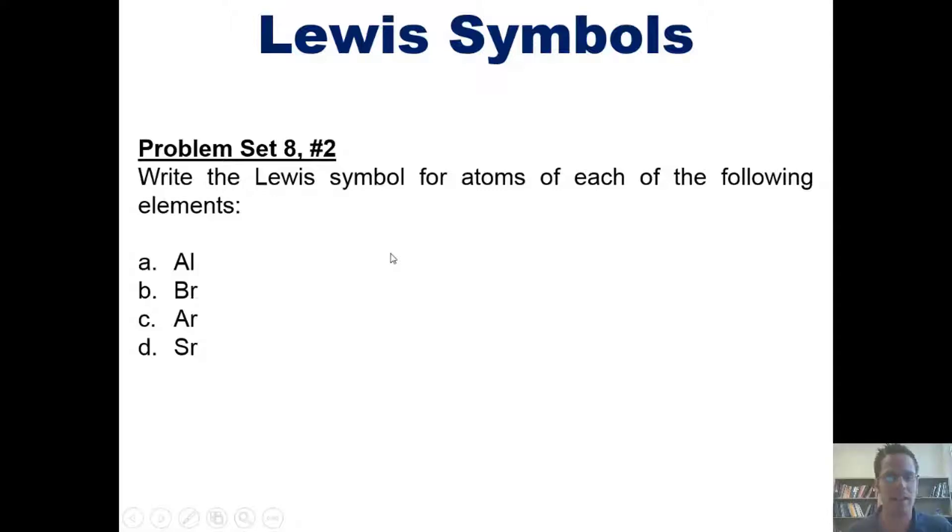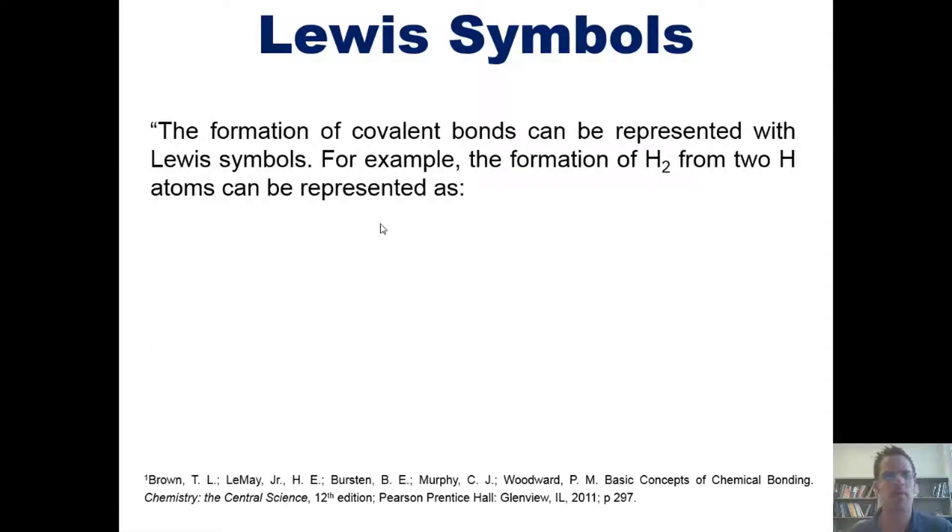Now we've talked in the past about covalent bonds, that is, bonds in which electrons are more or less shared between two atoms. The formation of covalent bonds can be represented using Lewis symbols.